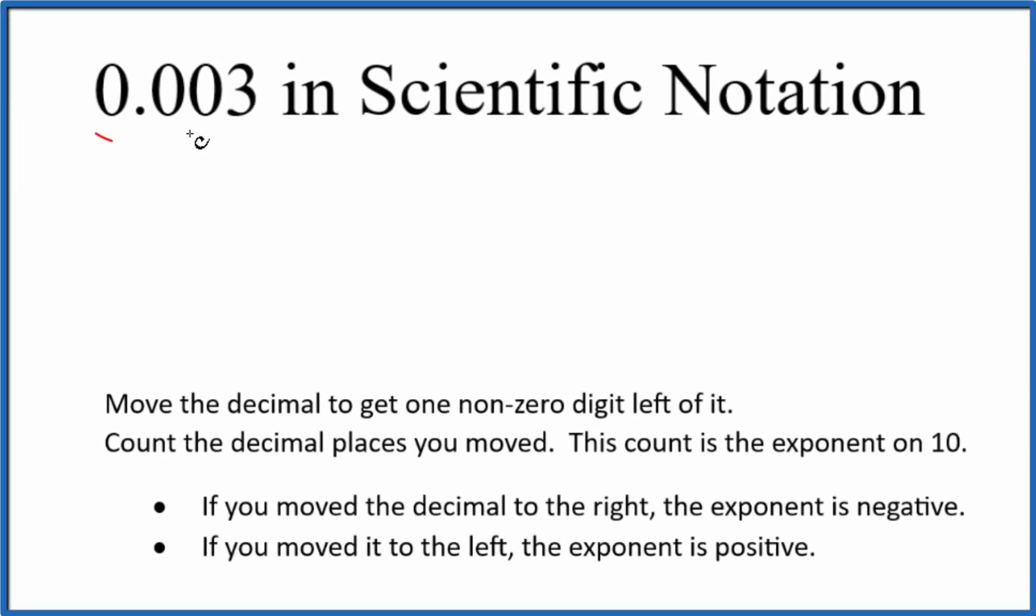Let's write 0.003 in scientific notation. The first thing I want you to notice is that 0.003 is less than 1, so we're going to have a negative exponent when we write this in scientific notation. Good place to start.